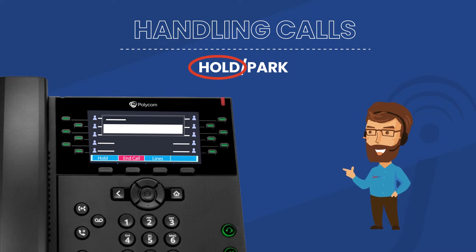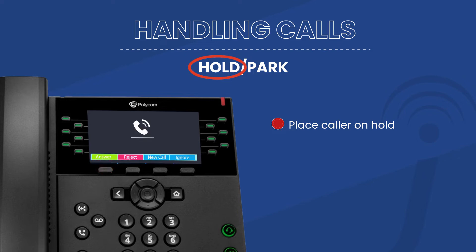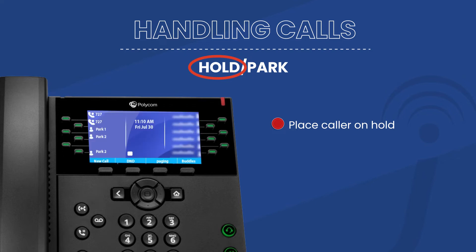To place a call on hold, simply press the hold button near the dial pad, or the on-screen hold soft key. Pro tip: if while on a call a second call rings your line — call waiting — you can pick up the second call and place the current call on hold in one shot by simply pressing the green answer button. The system is smart enough to put the first call on hold while answering the second call.